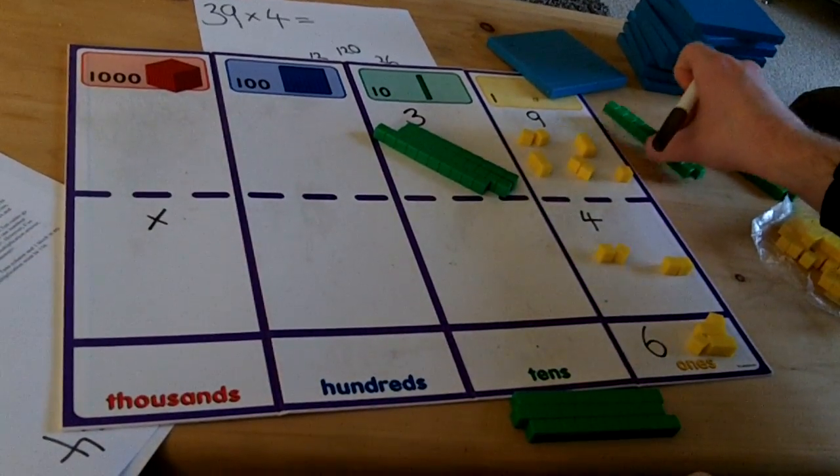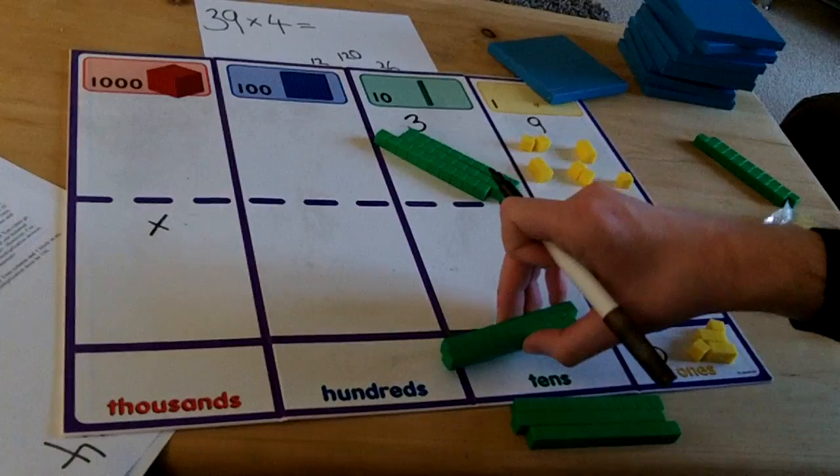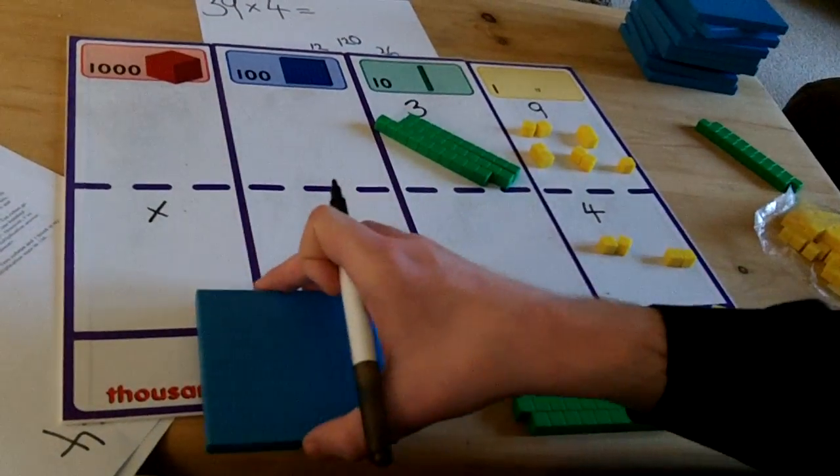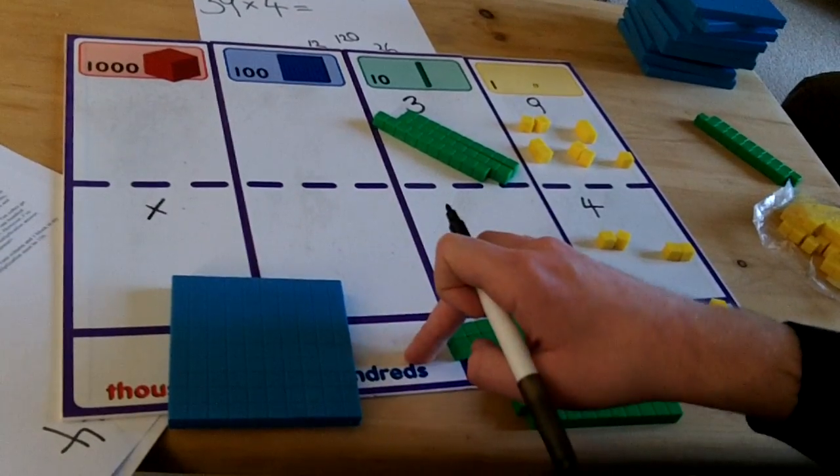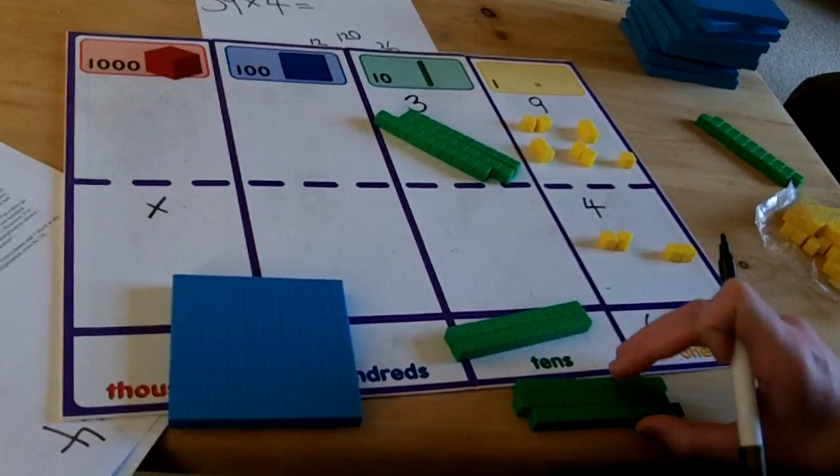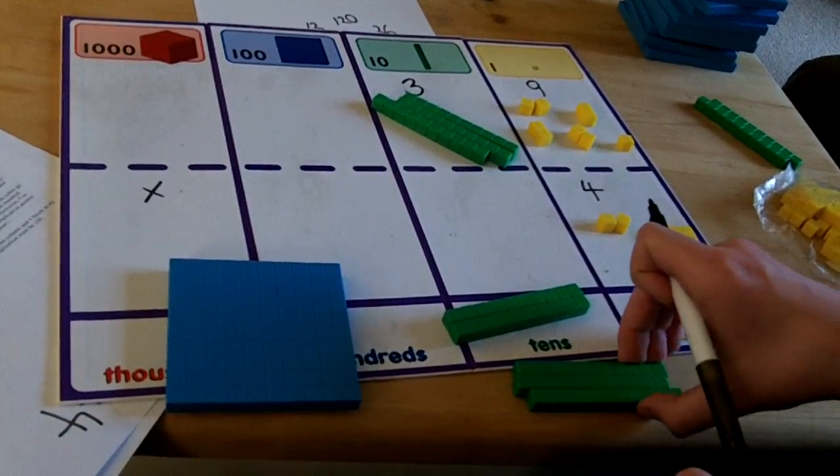The 2 rows of 10 cubes go into the answer part of the tens column and the 1 block of 100 cubes must also go into the answer part of the hundreds column. However, I have also got these 3 tens from the previous multiplication that I must add in.